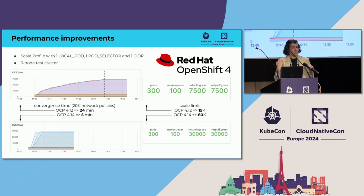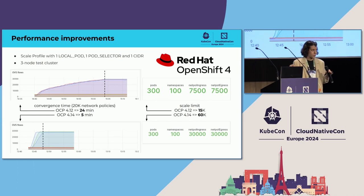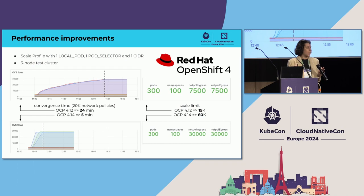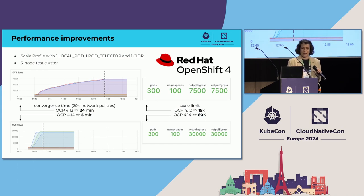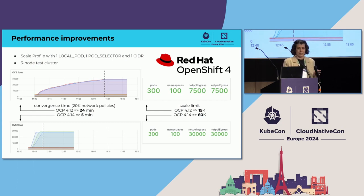Since the system converges faster now, it means we can also create more network policies within a given time. The scale limit for OpenShift 4.12 was just 15,000 network policies with a given profile, and in OpenShift 4.14 it was already 60,000 — which is the sum of ingress and egress network policies. We used this for OpenShift to track how well our network policy implementation works, and then we thought maybe it can be useful for someone else too. The rest of this story, Sean will tell you.